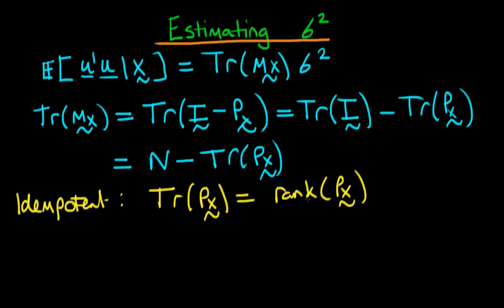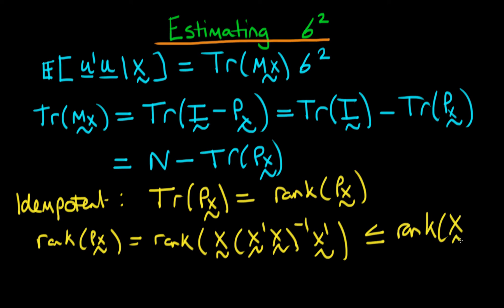Okay, so how does that help us? Well we can actually write down that the rank of px is equal to the rank of—just replacing px by its actual definition—x times x prime x to the power minus 1 times x prime. We know that essentially we're just taking x and multiplying it by some other stuff, so this actually has to have a rank which is less than or equal to the rank of the matrix x. There's no way that we can take a matrix x and multiply it by something else to get something of higher rank, especially when we're multiplying it by itself.